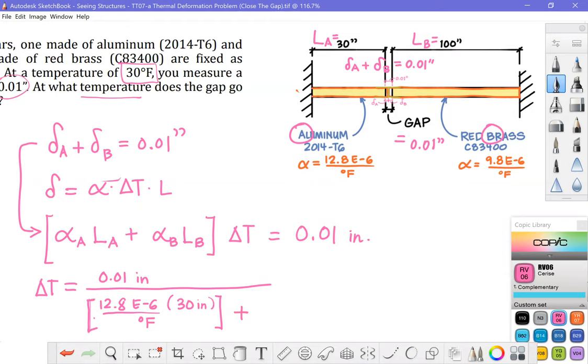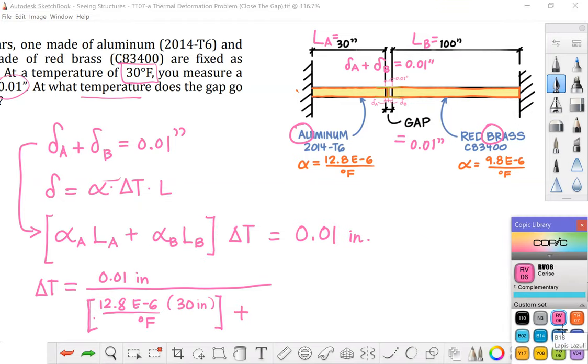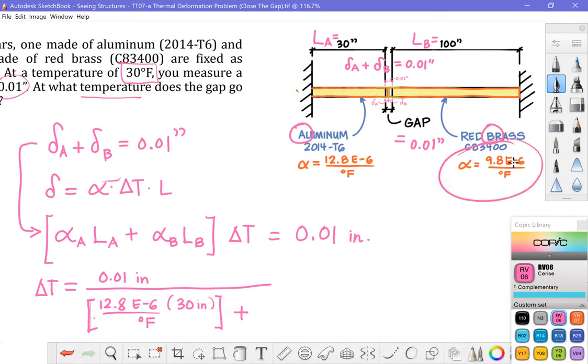and now let's add our second term. So my brass plus 9.8 E-6 strain per degree Fahrenheit times 100 inch length, okay, and that numerator kind of goes on and on and the denominator is there.